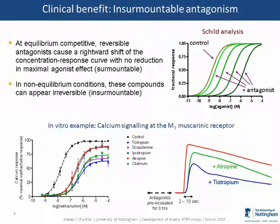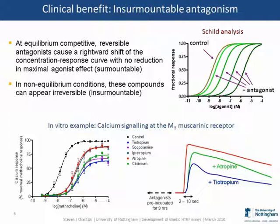An example of this is calcium signalling at the M3 receptor. Here we have a concentration-response curve to methacholine in the presence of 10 times Ki concentration of various muscarinic receptor antagonists. All those antagonists shift the curve to the right but also cause a reduction in the maximal effect achievable by methacholine, and the degree of reduction is directly related to the off-rate of those compounds. In the calcium assay — a very rapid signalling system — between agonist addition and measurement of peak calcium response is often just 2 to 10 seconds. In that timeframe, a slowly dissociating compound hasn't re-equilibrated enough to be fully outcompeted, so a number of receptors remain blocked even in the presence of large concentrations of agonist.